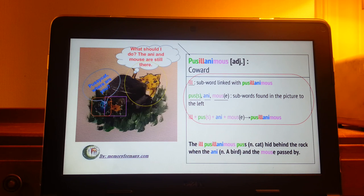At last, the linking subword is ill. The clue is in the example sentence located here. Why is the Pus ill? Because it is scared of a bird and the mouse. Guess what? The sickness of a cat is a coward. Or you would say Pusillanimous.